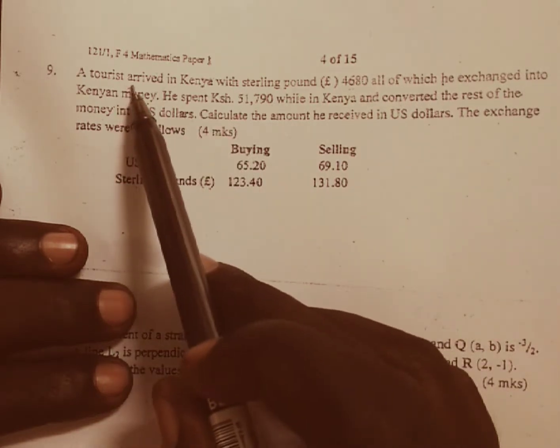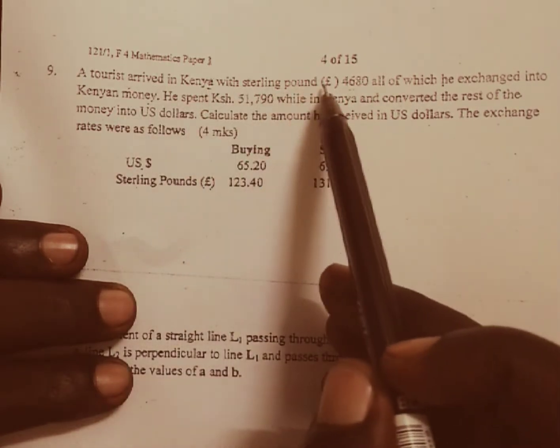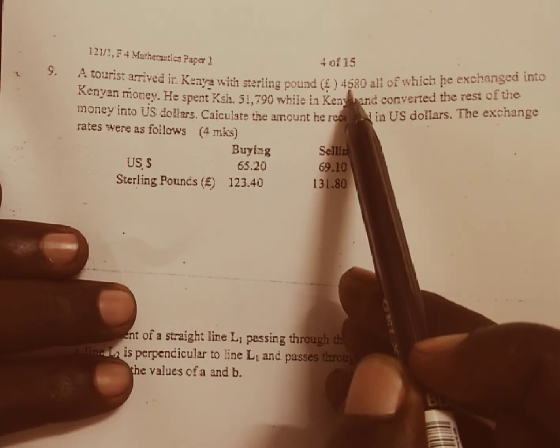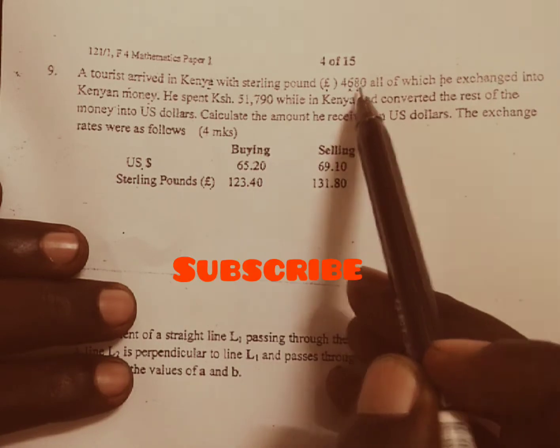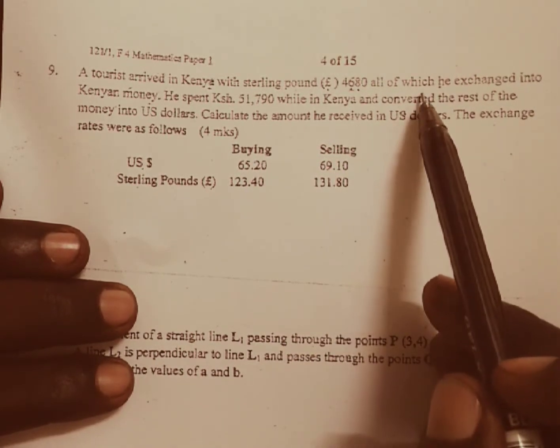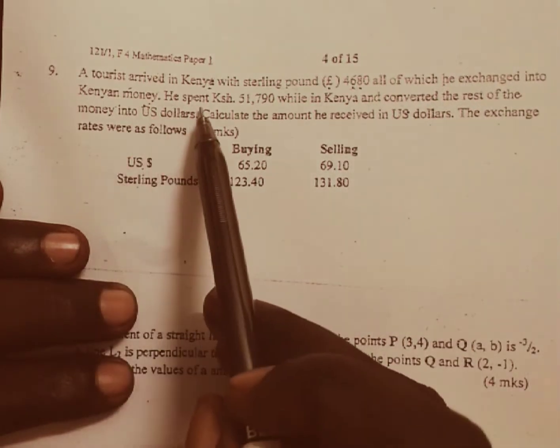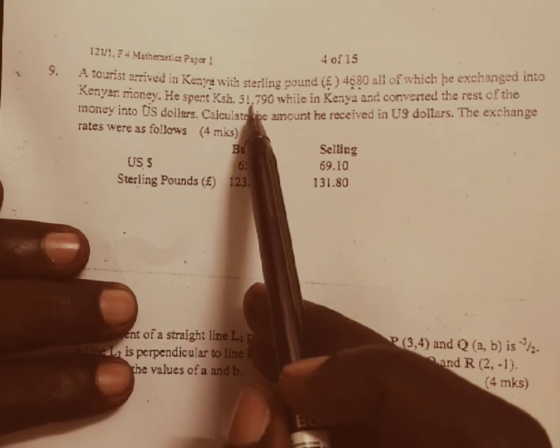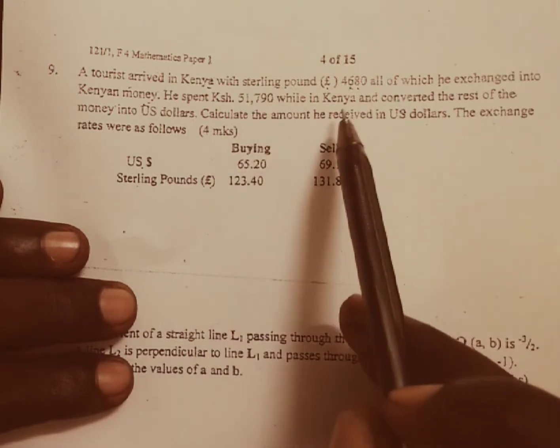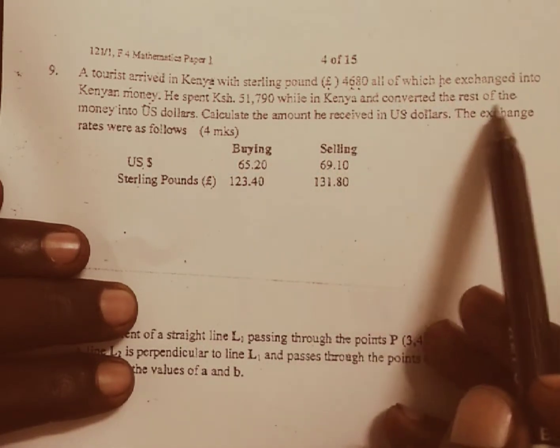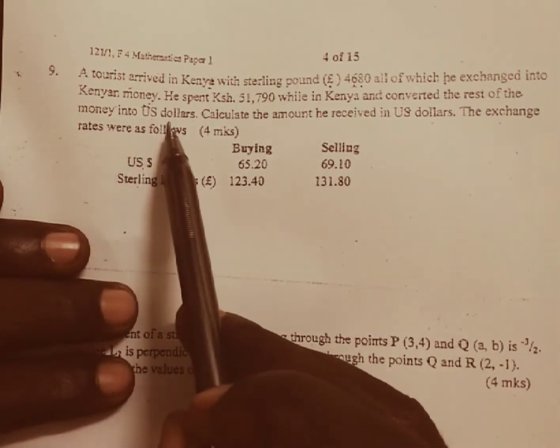A tourist arrived in Kenya with sterling pounds £4,680, all of which he exchanged into Kenyan money. He spent Kenya shillings 51,790 while in Kenya and converted the rest of the money into U.S. dollars.